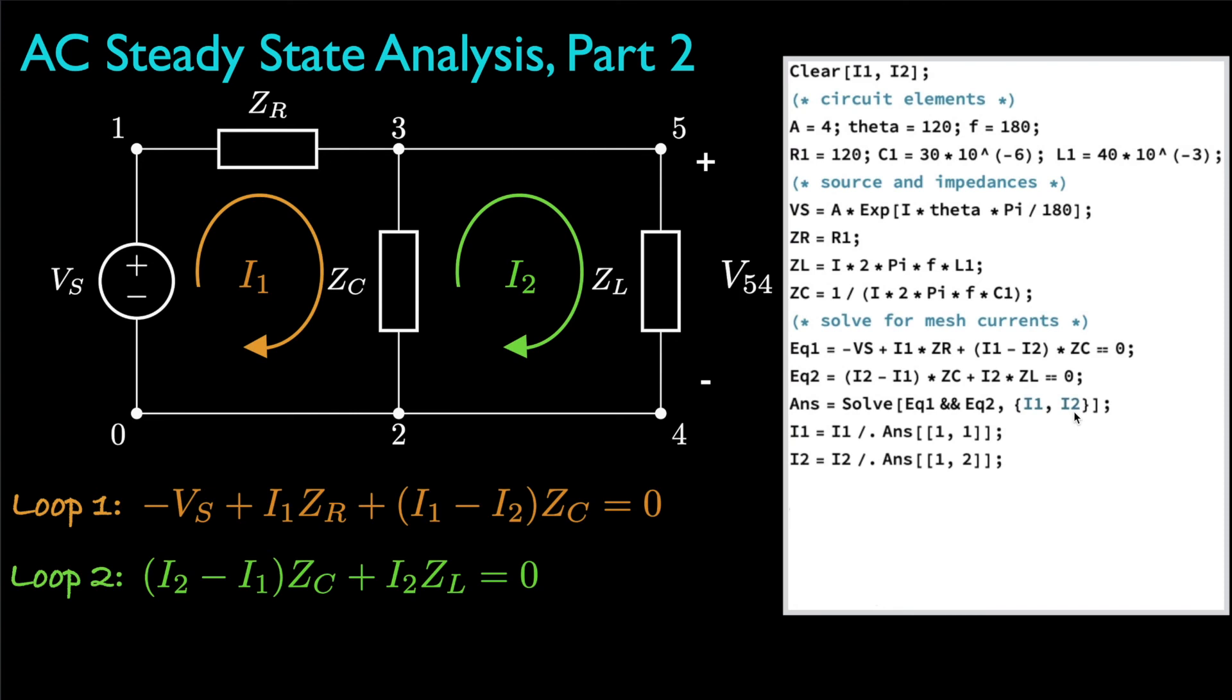We can follow that by using the appropriate commands to extract the results into the variables I1 and I2, and then using the result for I2 and the impedance for the inductor, we can finally solve for the voltage drop from node 5 to node 4. And when we display that, we can get the amplitude and the phase, which we can convert from radians to degrees.